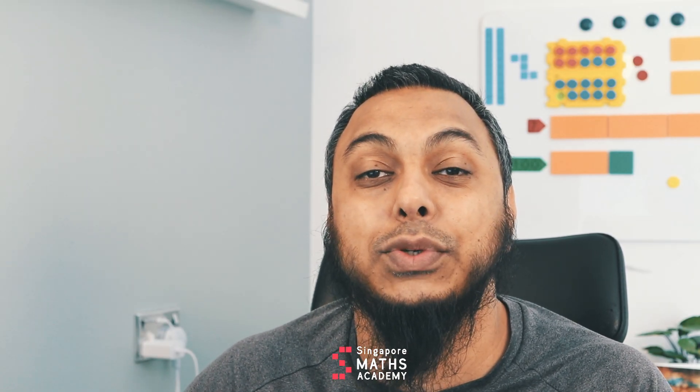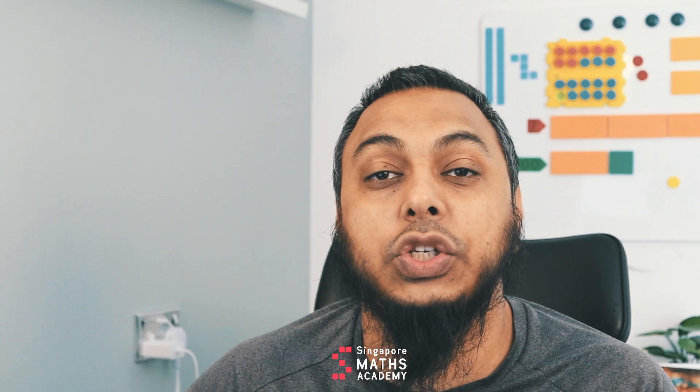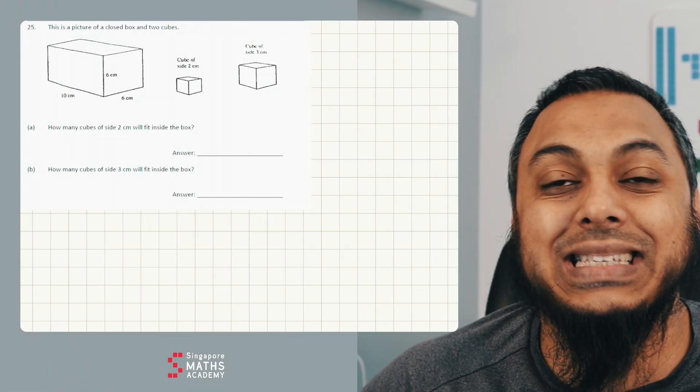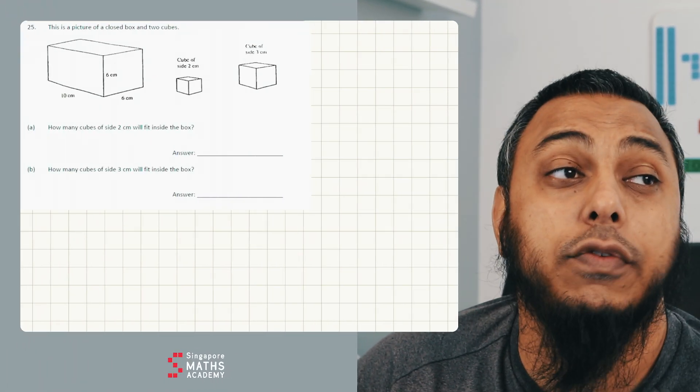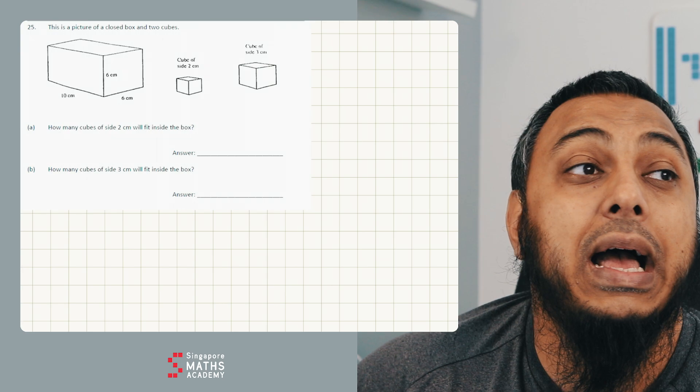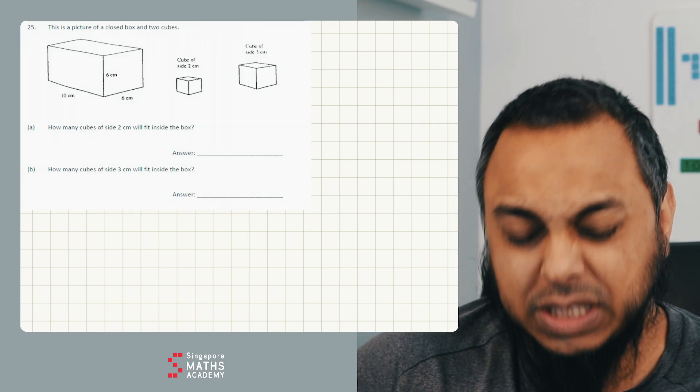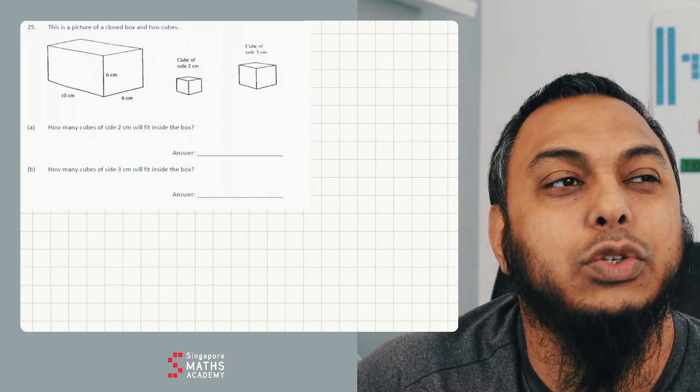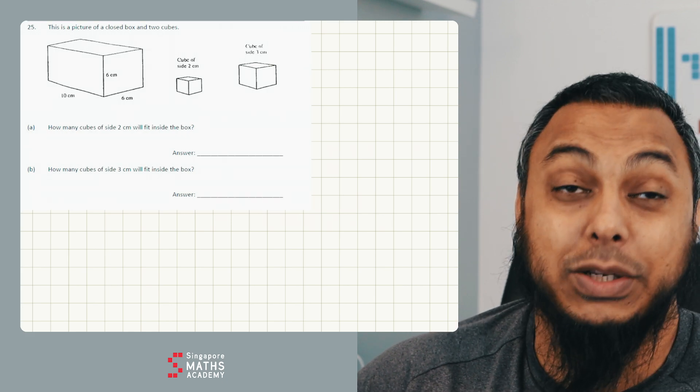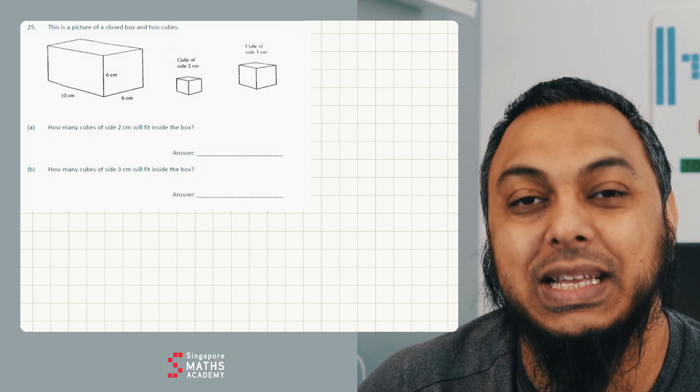Hi everyone, welcome back to another video on Saint Olaf School. So we're going to look at this question on our board and it says that this is a picture of a closed box and two cubes. You can see the box is quite big, cubes are small, one is a 2x2x2 cube and one is a cube that's three centimetres.